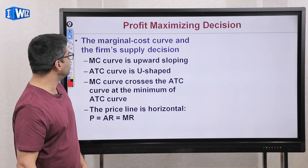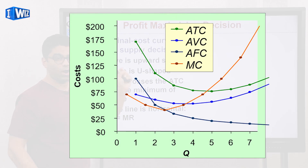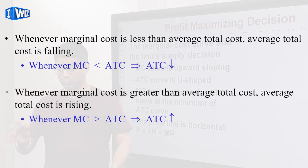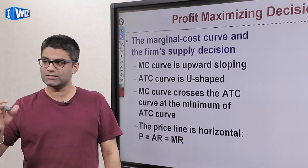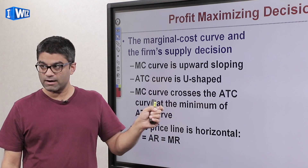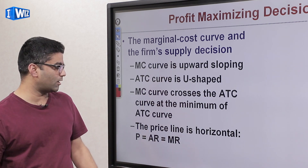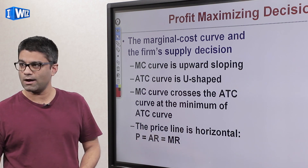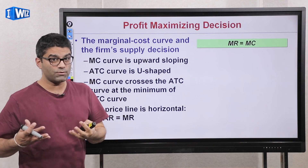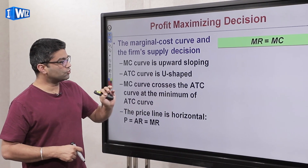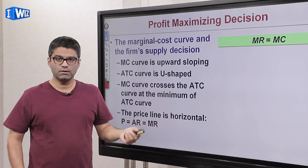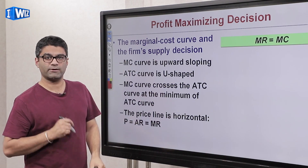A brief review before we continue: make sure you understand why MC is upward sloping — it's because of diminishing marginal product of labor. Make sure you understand that ATC is always U-shaped because of the shapes AFC and AVC take. MC will always cut across ATC at its minimum. And then in perfect competition, price equals AR equals MR. The quantity we produce at where MR equals MC is going to be true for every market, but the fact that price equals MR is only going to be true for a perfectly competitive market.